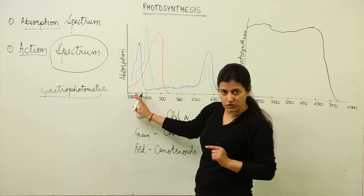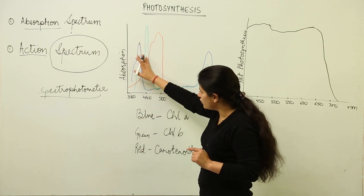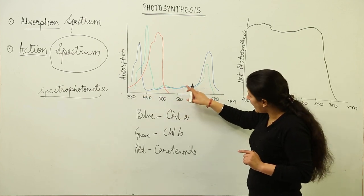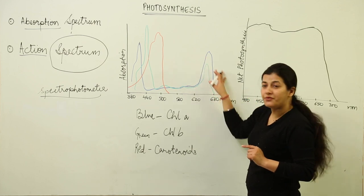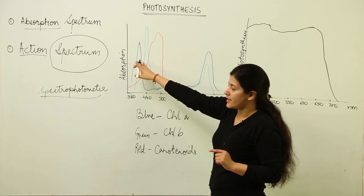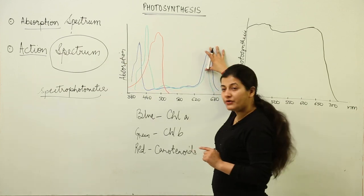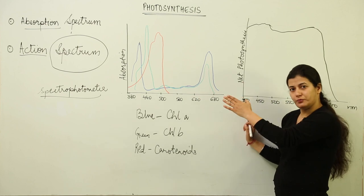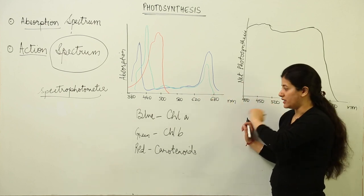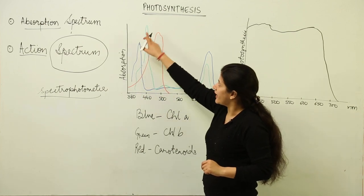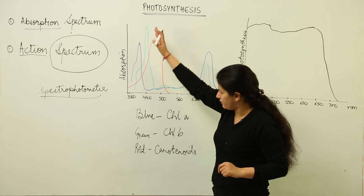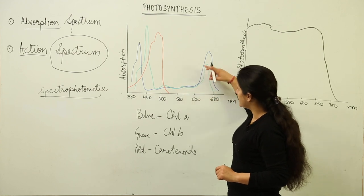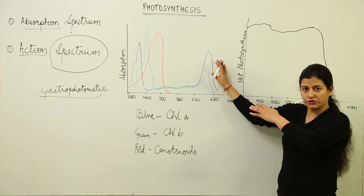Considering chlorophyll a, represented in blue, it absorbs maximum in the violet and indigo region. As we move further and wavelengths increase, absorption declines to a great level, and then it rises again in the red region. So chlorophyll a shows maximum absorption in the violet-blue and red regions, taking up energy at those wavelengths. Similarly for chlorophyll b, absorption is maximum in the blue region, then sharply declines, and rises again in the red region, similar to chlorophyll a.